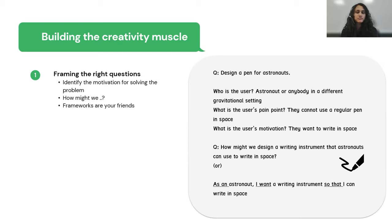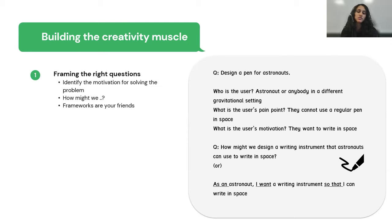What is their problem? They want a pen. But why? Why do they want the pen? To write — so the motivation is writing. Let's reframe the problem statement by weaving the motivation in: how might we design a writing instrument that astronauts can use to write in space or zero gravity? You notice the difference — we're focusing on the problem rather than involving the solution in the problem statement. Little tweaks like this help immensely when trying to make product decisions.